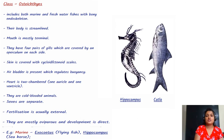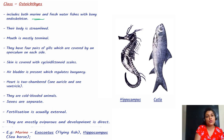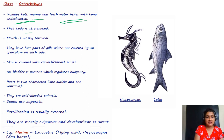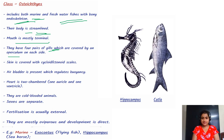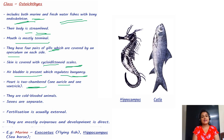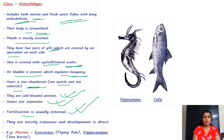Now let us come to Osteichthyes — the fish we are familiar with. This includes both marine and freshwater fishes with bony endoskeleton. The body is streamlined and the mouth is mostly terminal. They have four pairs of gills covered by an operculum. Skin is covered with cycloid or ctenoid scales. Air bladder is present which regulates buoyancy. Heart is two-chambered. They are cold-blooded, sexes separate, fertilization external, mostly oviparous, and development is direct. Examples: Katla and seahorse.